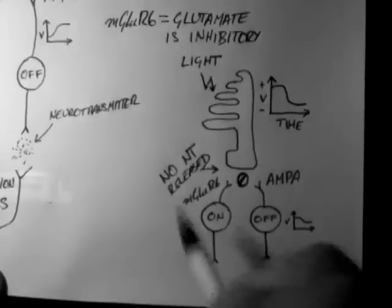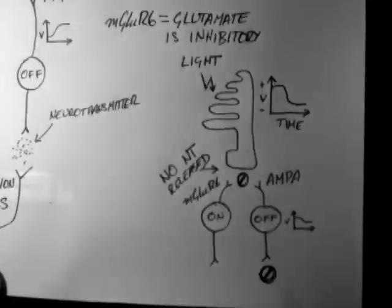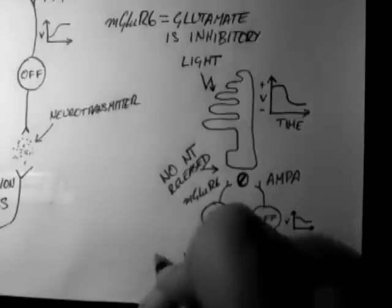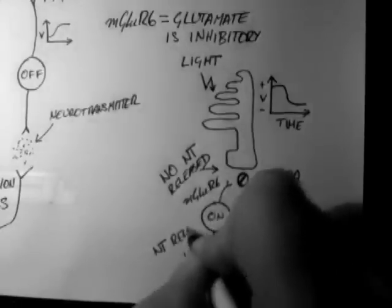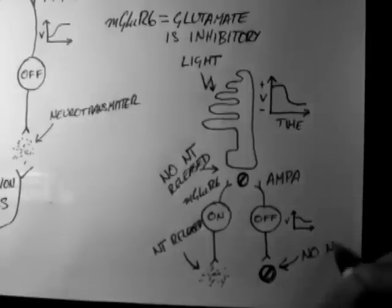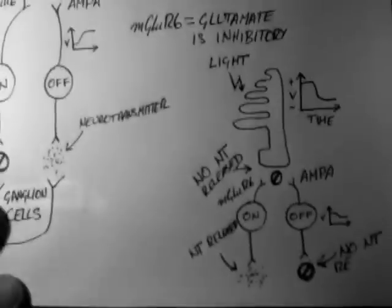The on cell, however, without glutamate, becomes more excited, so it can release neurotransmitter. This is because there's no inhibition or reduced inhibition of the cell.